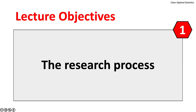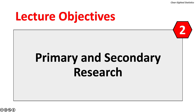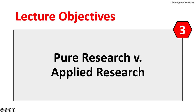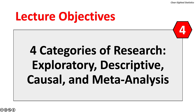First, we will review the research process. Second, we will distinguish between primary and secondary research. Third, the difference between pure research and applied research will be explained. Fourth, four categories of research will be defined: exploratory research, descriptive research, causal research, and meta-analysis.